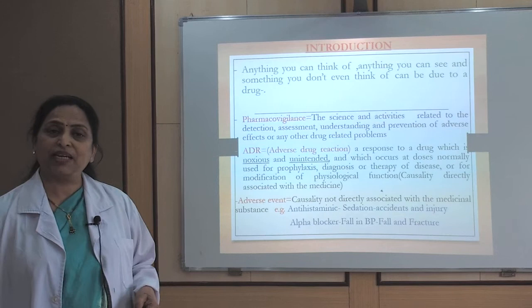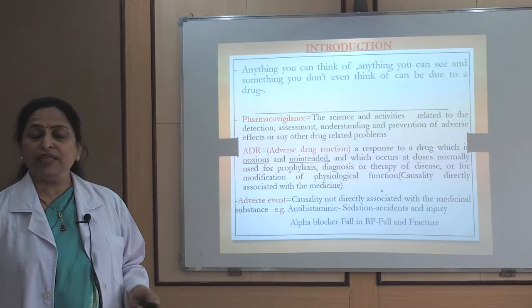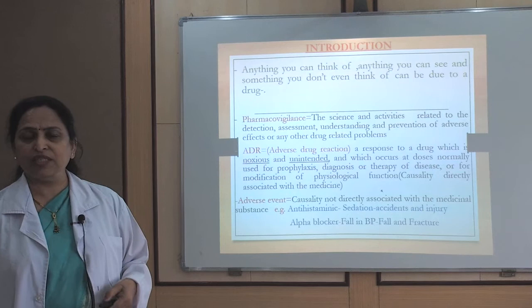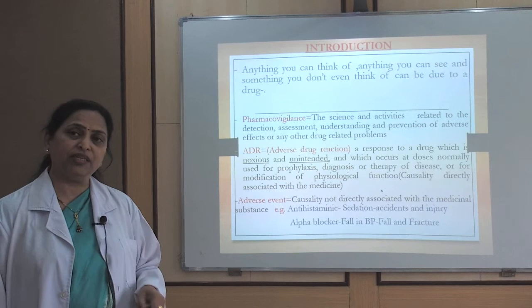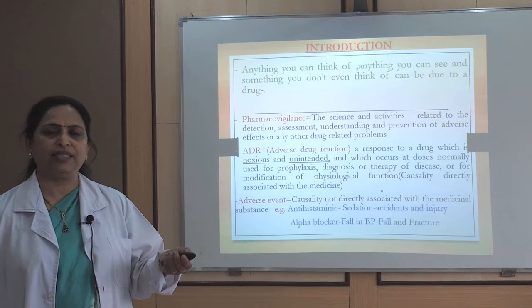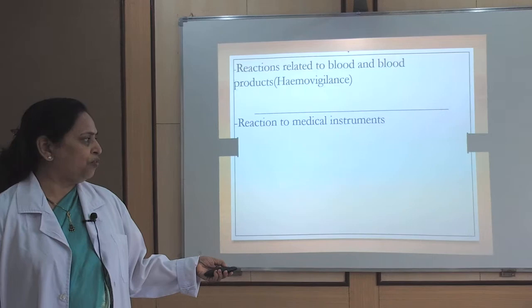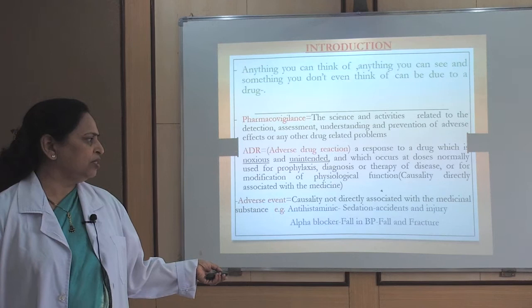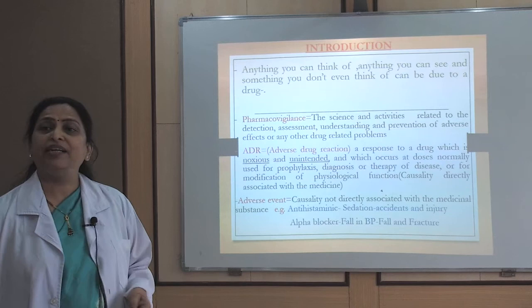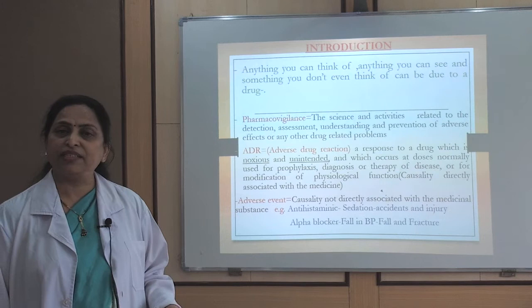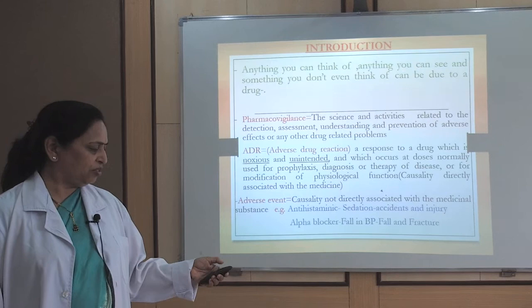Another example: alpha blockers prescribed for BPH (benign prostatic hypertrophy) can show first-dose phenomenon — the first dose may cause sudden hypotension and the patient may fall. The fall in blood pressure is the adverse drug reaction, while the fall itself and a resulting fracture would be the adverse event. That is the distinction between the two.